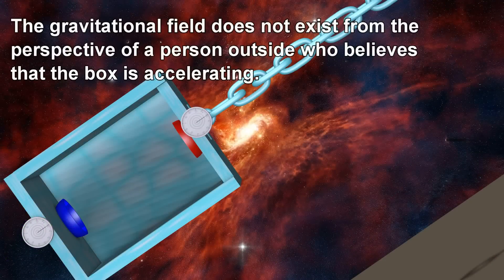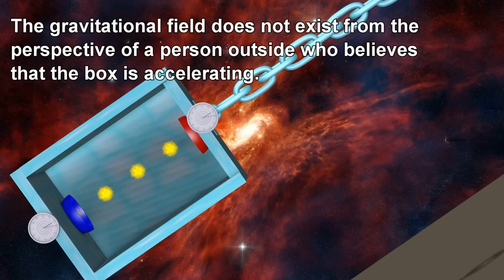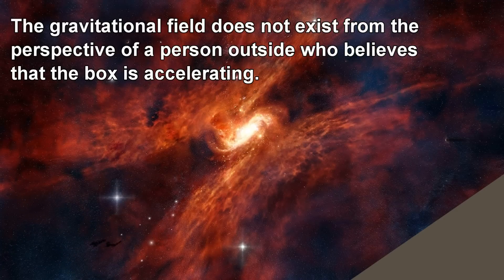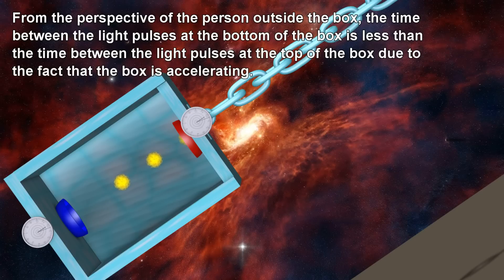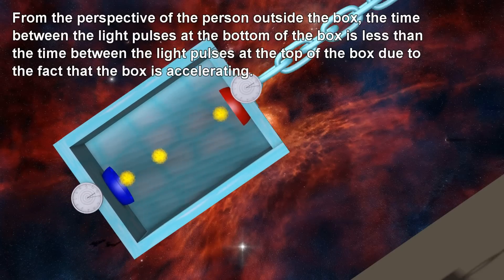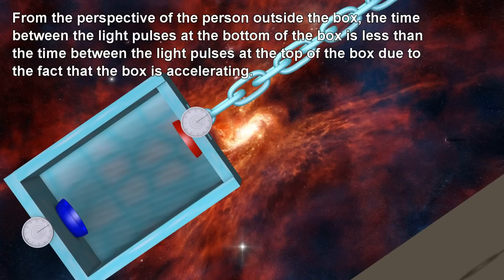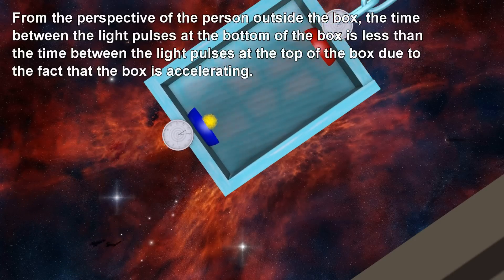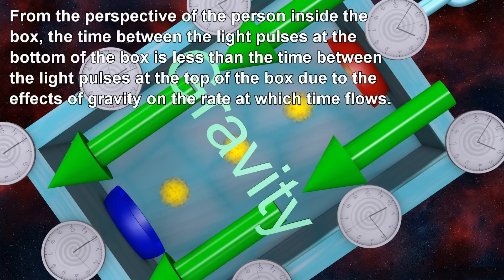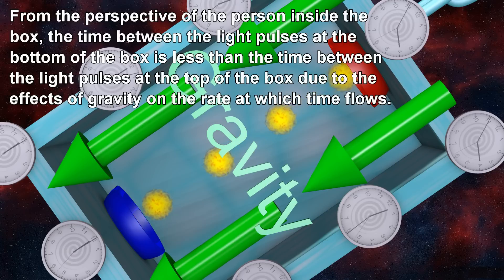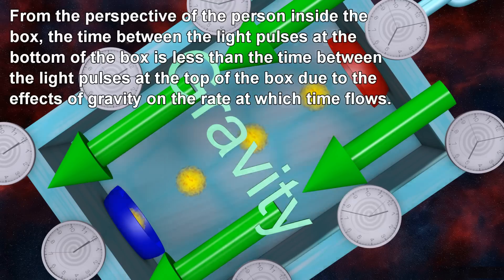The gravitational field exists only from the perspective of a person who believes that the box is standing still. From the perspective of a person outside the box, the time between the light pulses at the bottom of the box is less than the time between the light pulses at the top of the box, due to the fact that the box is accelerating. From the perspective of the person inside the box, the time between the light pulses at the bottom is less than at the top, due to the effects of gravity on the rate at which time flows.